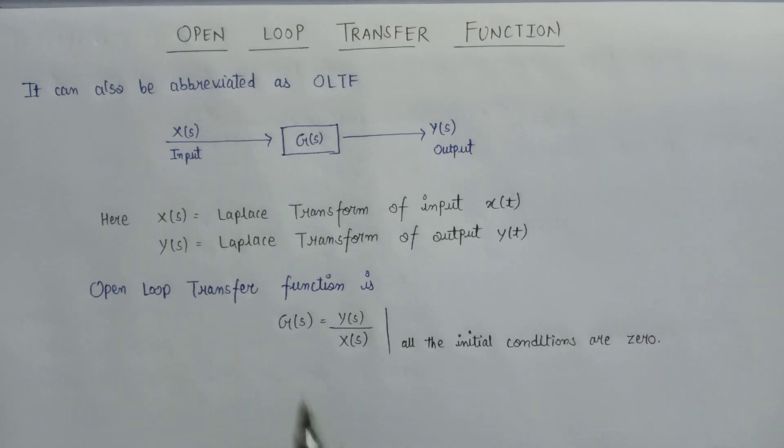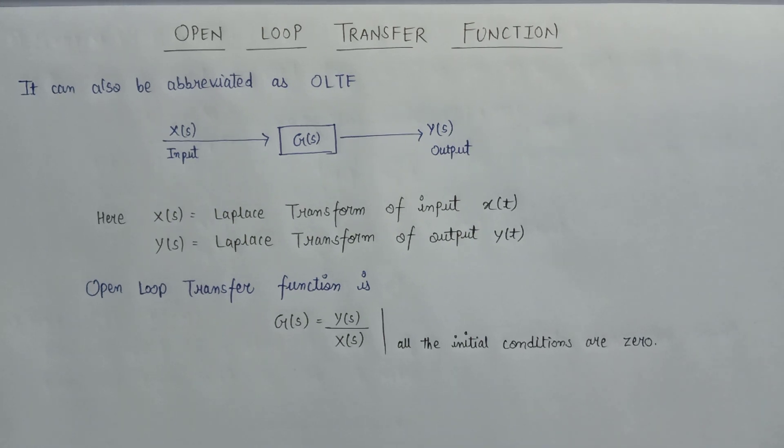So this is the basic formula for the calculation of open loop transfer function, which is G(s) equals Y(s) over X(s), assuming that all initial conditions are zero. This is all about the open loop transfer function. Thank you.